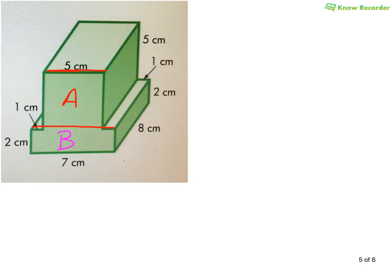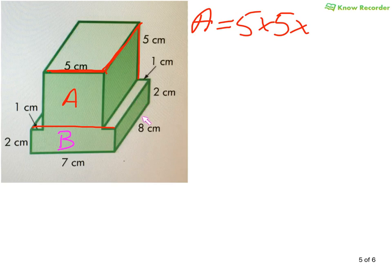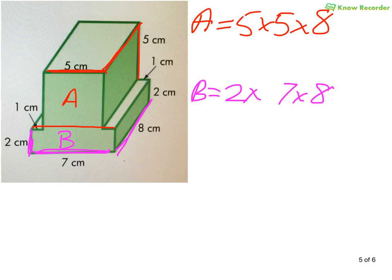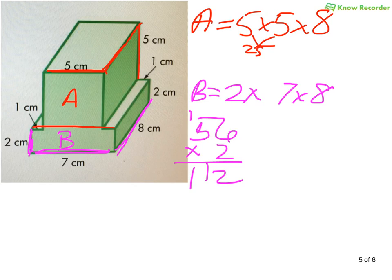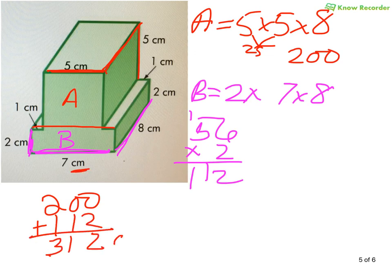I'm going to separate this shape right across here. I've got a stick of butter and a rectangular prism at the bottom. For A, I have a length of 5, a height of 5, and I need a width — you can search all over the place; this line is the same as this line — 8. For B: height of 2, length of 7, width of 8. 7 times 8 is 56, times 2 is 112. For A: 25 times 8 — 8 quarters is $2, so 200. 200 plus 112 equals 312 centimeters cubed.